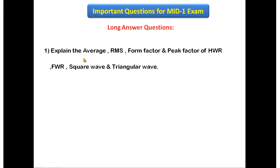The next long answer question is: explain the average value, RMS value, form factor, and peak factor of a half wave rectifier, full wave rectifier, square wave, and triangular wave. For these waveforms, you need to find the average value, RMS value, form factor, and peak factor with neat definitions, and you have to derive the equations.